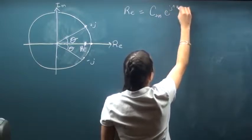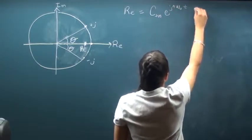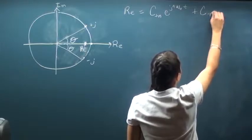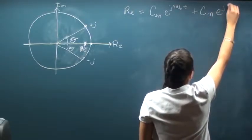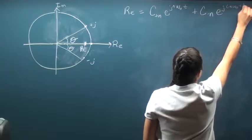e to the j n omega naught t plus the coefficient at negative n, e to the j negative n omega naught t.